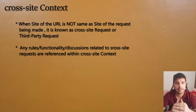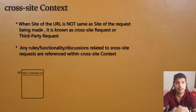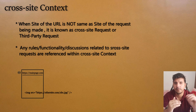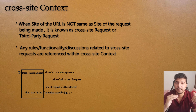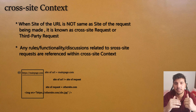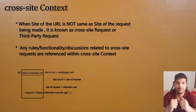In contrast, we also have the cross-site context, in which the site of the request and the site of the URL we are visiting are not the same. For example, if you are visiting mainpage.com but within your page there is another request being made to othersite.com — for an image, JavaScript, or API calls — these types of requests are known as third-party requests or cross-site requests, and the context is known as the cross-site context.